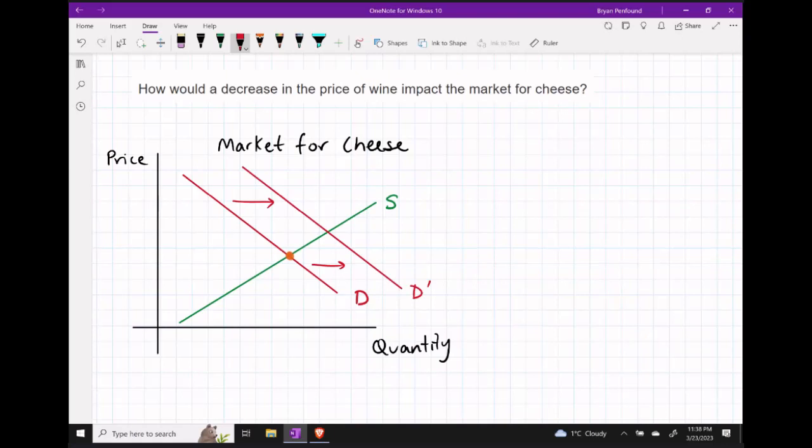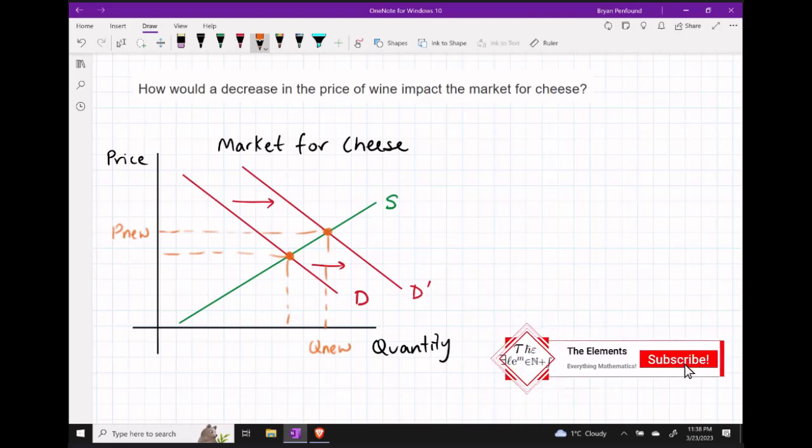And if that's the case, we would see a new demand curve to the right of our old one. And when we compare our new equilibrium point with our old equilibrium point, this suggests that the price of cheese is going to increase, as well as the quantity.